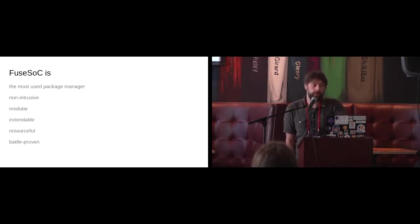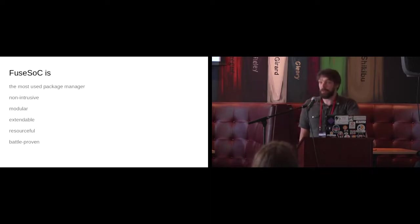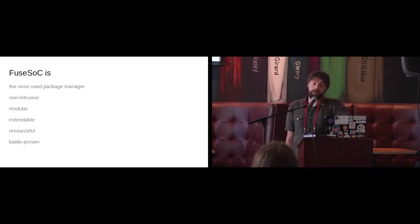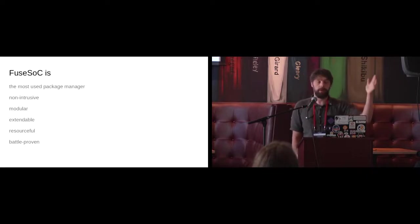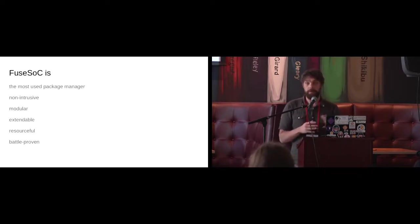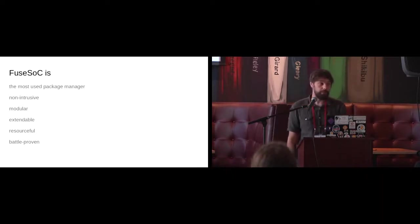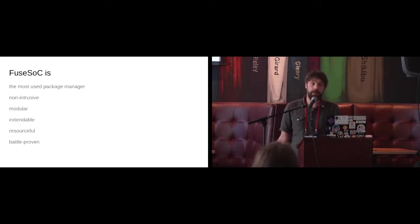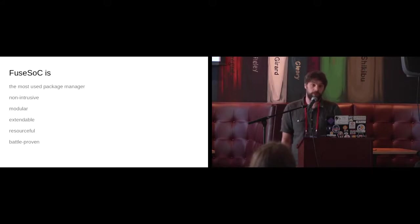It's not that there's too much competition. But key points: it's non-intrusive — you just add your core description file, it puts no extra burden on your project structure, you can structure your code as you like, and you don't even need to store your core description file with your project — you can store it elsewhere and reference a GitHub repo. It's modular, extendable, and resourceful — you have hundreds of different IP cores already packaged for it.